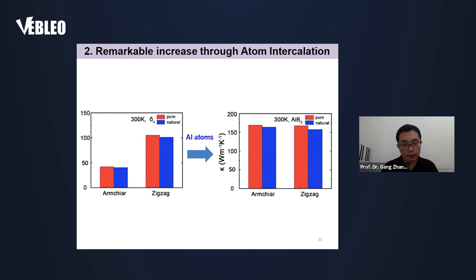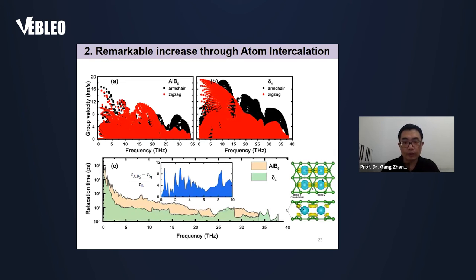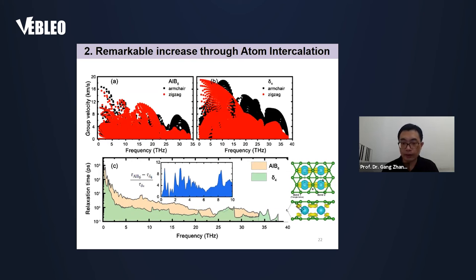Previously, most people studied thermal conductivity enhancement in nanostructures, but they focused on the cross-plane direction. All previous studies could only achieve enhancement in cross-plane thermal conductivity. But our work is the first to demonstrate in-plane thermal conductivity enhancement. We use the Boltzmann transport equation and first-principles calculations to understand this phenomenon. Comparing the group velocity and the phonon relaxation time, we see the group velocity is comparable between the two structures. However, for the relaxation time, with atom intercalation, the relaxation time increases about 10 times. So this is the anharmonicity effect induced by atom intercalation, which results in the enhancement of in-plane thermal conductivity.